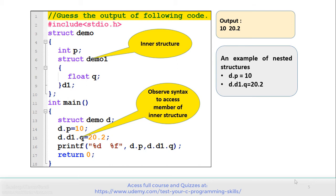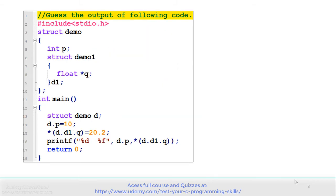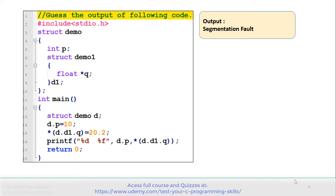Let's move to the next example. See the code carefully and gauge the output. This program is similar to the previous one. The only difference is on line number 8, where q is not a normal variable but a pointer — float pointer q. And on line number 15, *(d.d1.q) is equal to 20.2. The output of this program is that it gives a segmentation fault.